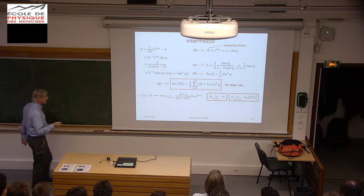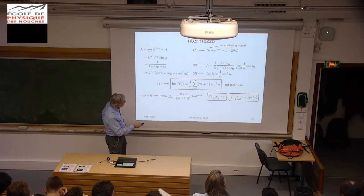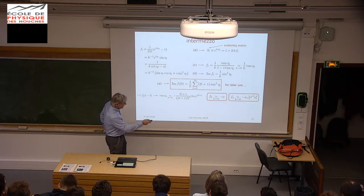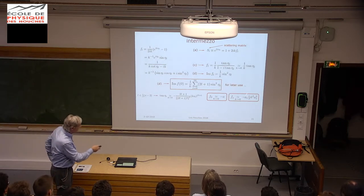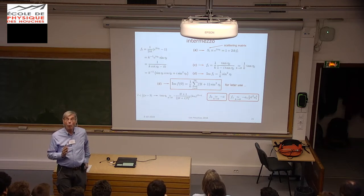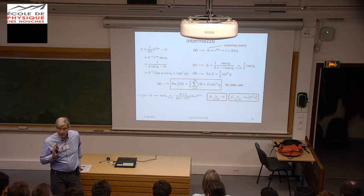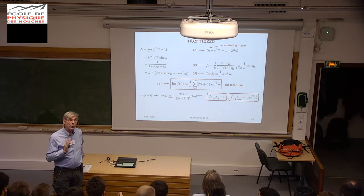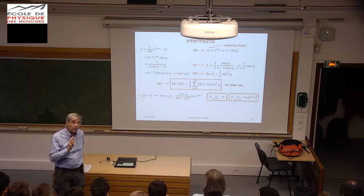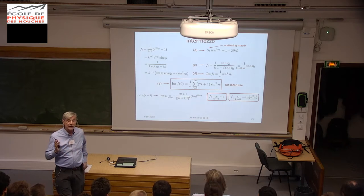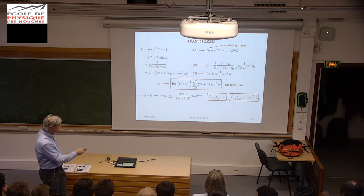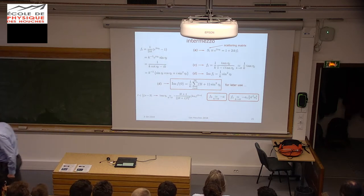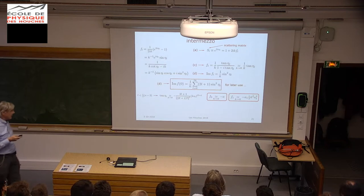We have scattering amplitudes but not yet cross-sections. The amplitude for L equals 1 P-waves falls off with k squared—meaning that if k goes to zero, the scattering amplitude goes to zero. There is no P-wave scattering at very low energy. We knew that already because at very low energy we are in the S-wave regime, and the interaction does not give a contribution. The scattering amplitude goes to zero if L is larger than zero.